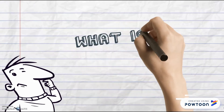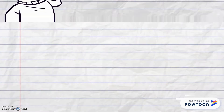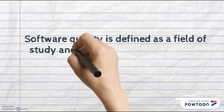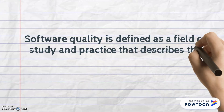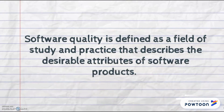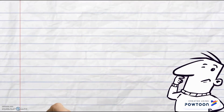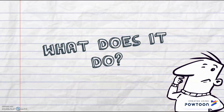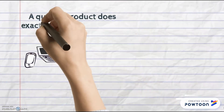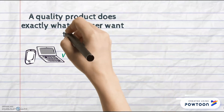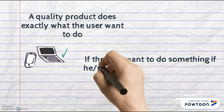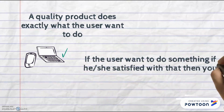To begin with, what is software quality? Software quality is defined as a field of study and practice that describes the desirable attributes of software products. A quality product does exactly what the user wants. So if the user wants to do something and he or she is satisfied with that, then you can consider the software a quality product.